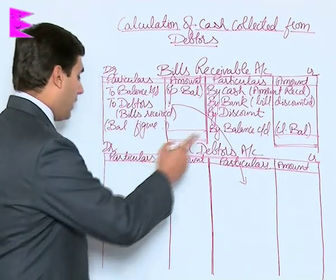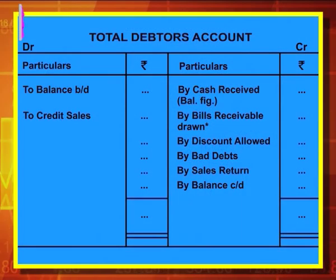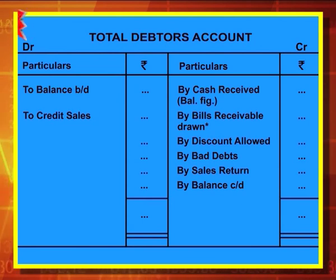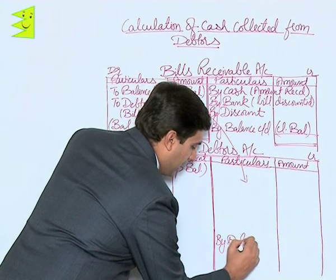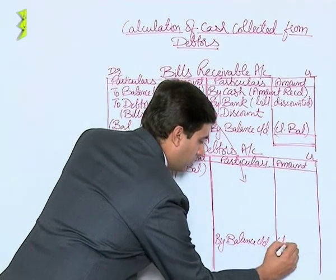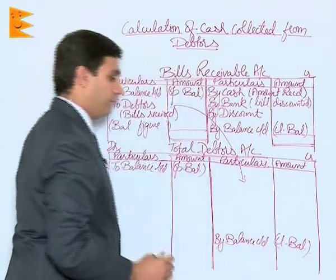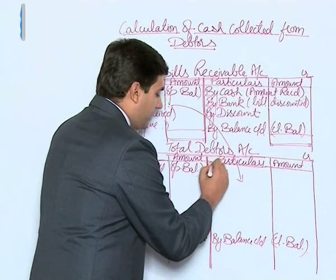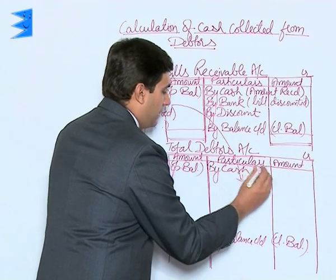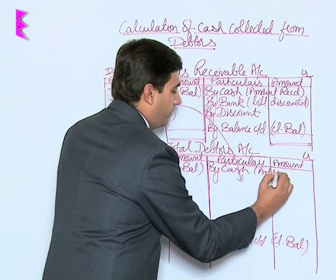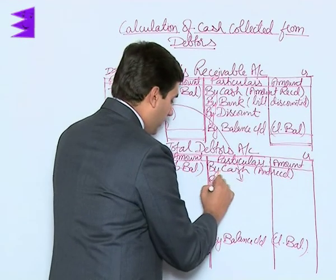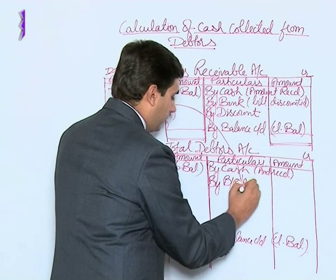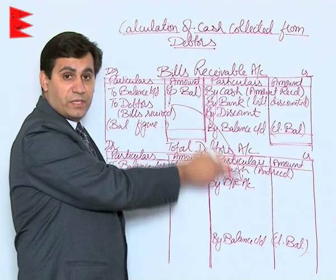Now coming to the total debtors account. Again, since it is an asset, the first entry on the debit side is balance brought down — the opening balance. The closing balance appears as balance carried down. On the credit side, the first entry is by cash — the amount received from debtors. Then, by bills receivable account — this is the same amount transferred from the debit side of the bills receivable account.